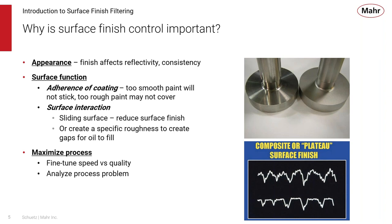There's also surface function — adherence of coating is an important feature. If the surface is too smooth, maybe the paint will not stick, or if it's too rough, the surface finish might actually show through the paint covering. To monitor the surface for coatings is very important.